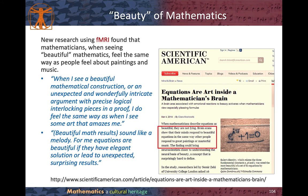There are research findings on the beauty of mathematics. New research using fMRI found that mathematicians, when seeing beautiful mathematics, feel the same way as people feel about paintings and music. When they see a beautiful mathematical construction, or an unexpected and wonderfully intricate argument with precise logical interlocking pieces in a proof, they feel the same as when seeing art that amazes them. Beautiful math results sound like a melody. Equations are considered beautiful if they have elegant solutions or lead to unexpected, surprising results.